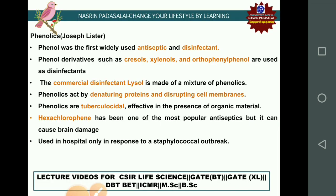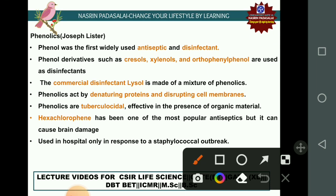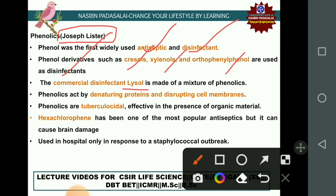The next method is the chemical method of sterilization. The first chemical is phenol, first employed by Joseph Lister. Phenol was widely used as both an antiseptic and disinfectant. Phenol derivatives include cresols, xylenols, and orthophenylphenol, used as disinfectants. Lysol is a commercial disinfectant that is a mixture of phenolics. The mechanism of phenolics is denaturing proteins and disrupting the cellular membrane.